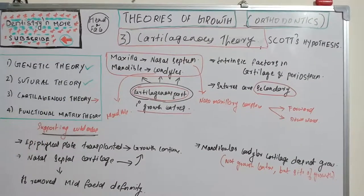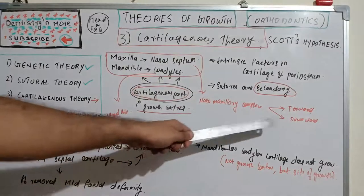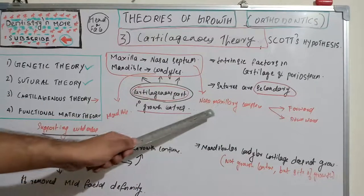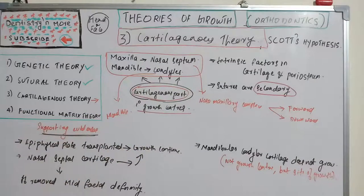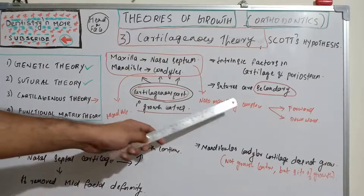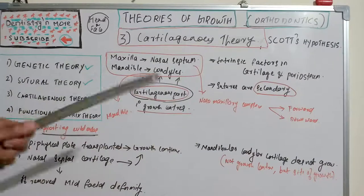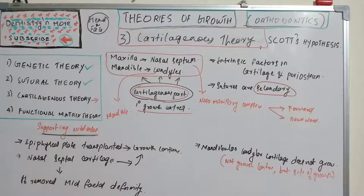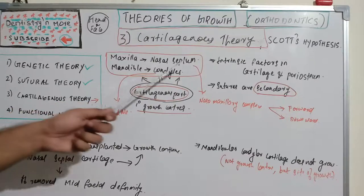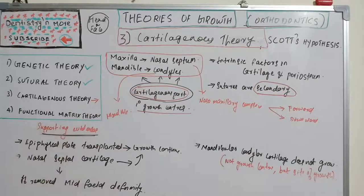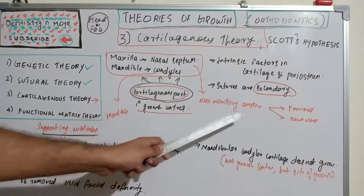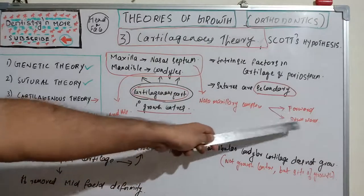The nasal septal cartilage forwardly and downwardly displaces the nasomaxillary complex as part of growth. We saw the nasomaxillary complex in sutural theory too, but there it was the sutures creating the growth potential. Here, it is the nasal septal cartilage that creates the potential and moves the nasomaxillary complex forward and downward.